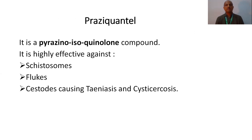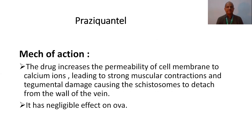Coming to the second drug — that is praziquantel. Praziquantel is a pyrazino-isoquinoline compound. It is highly effective against schistosomes and flukes like liver flukes, lung flukes, and intestinal flukes. These schistosomes cause schistosomiasis and cysticercosis. Praziquantel — coming to how it reacts. The mechanism of action is very important. The drug increases the permeability of the cell membrane to calcium ions, so there is a large influx of calcium ions, leading to strong muscular contractions. Thereby tegmental damage causes the schistosome to detach from the wall of the vein.